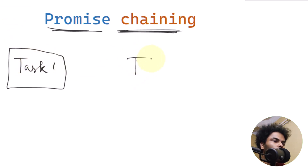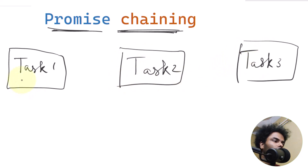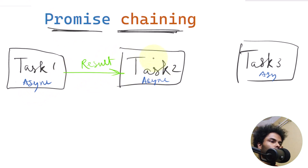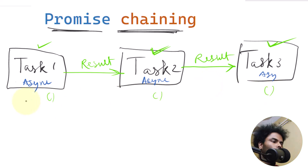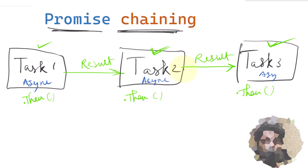For example, suppose we have task one, task two, and task three, and these three tasks are asynchronous. If the result from task one is used in task two, and the result from task two is used in task three, then they must execute sequentially. Because they are asynchronous, we cannot simply call them one after another and expect sequential execution. To achieve that, we have to use dot-then chaining to ensure they execute one after another.